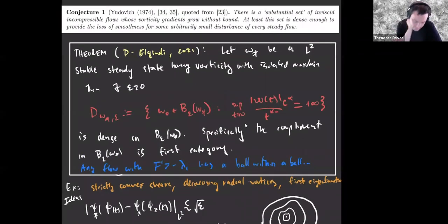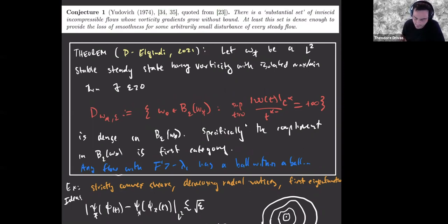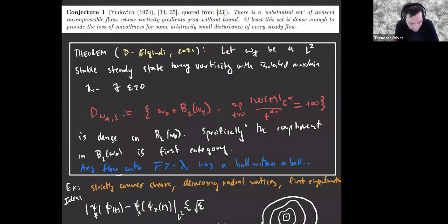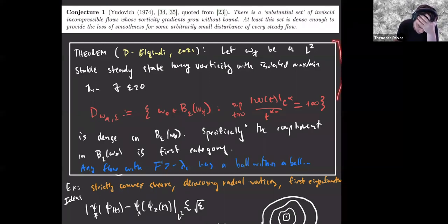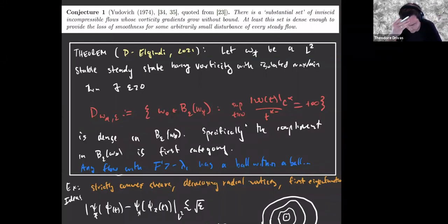Yudovich conjectured that this type of behavior should be generic. The way he said it: a substantial set of inviscid and incompressible flows whose vorticity gradients grow without bound should be substantial, and at least dense enough to provide loss of smoothness or an arbitrary disturbance of every steady flow. It's a quite reasonable conjecture if you've ever looked at simulations of 2D fluids. Here's a small step towards this — it's certainly not as general as Yudovich asserts.